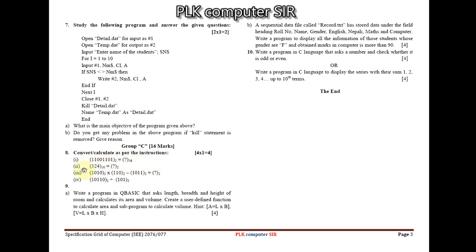For Question 8 (number system), there are 4 sub-questions: 2 conversions such as binary to hexadecimal or decimal to binary, and 2 binary arithmetic operations — which can be addition, subtraction, multiplication, or division. Question 10 (C programming) offers two choices: write a program to check whether a number is odd or even (if statement, 4 marks), or write a program to display the series 1, 2, 3, 4... up to 10 terms with their sum (looping, 4 marks) — attempt only one.